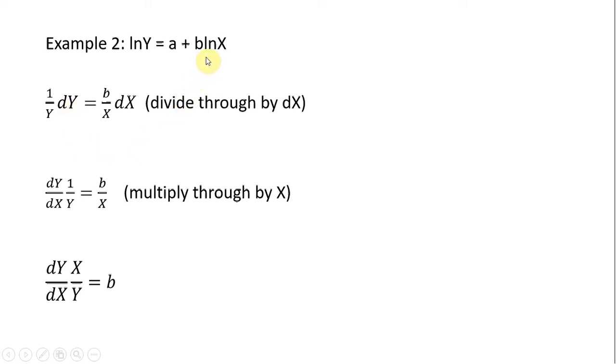And the derivative of the natural log of x is just 1 over x, but that's being multiplied by b, so that b is in the numerator. And again, it's a total differential, so we're going to multiply that through by the change in x or dx.